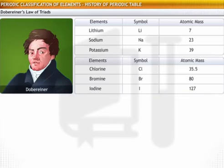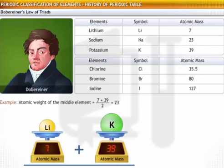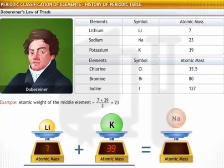To illustrate this law, consider the triad of lithium, sodium, and potassium. The atomic mass of lithium is 7. The atomic mass of sodium is 23. And the atomic mass of potassium is 39. The arithmetic mean of the atomic masses of lithium and potassium is 23. This is equal to the atomic mass of sodium.